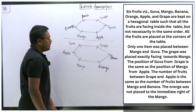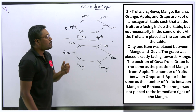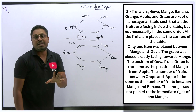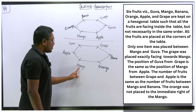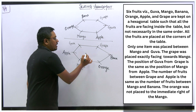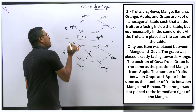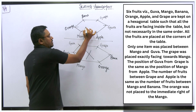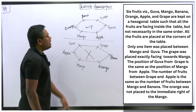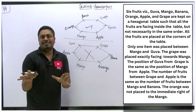The arrangement is completed. The last point: orange was not placed immediately to the right of mango. Checking our diagrams — in one diagram, orange is to the immediate right of mango, so that case is eliminated. In the other diagram, orange is to the immediate left of mango. So that is the correct diagram, and case number 1 is the answer for this arrangement.